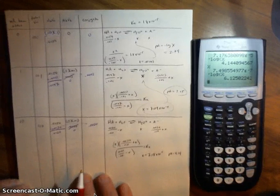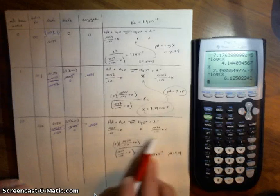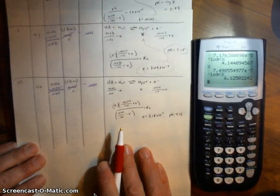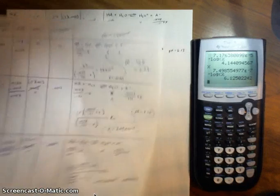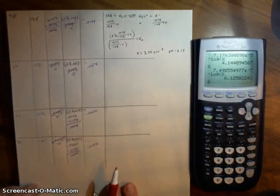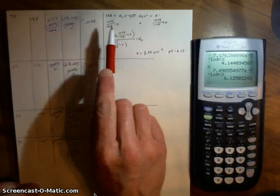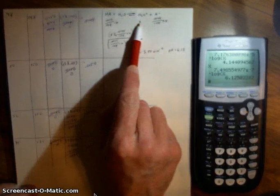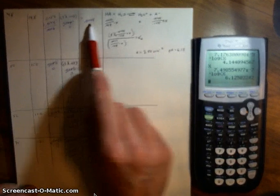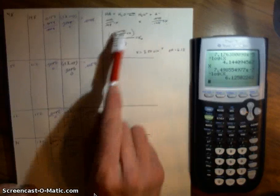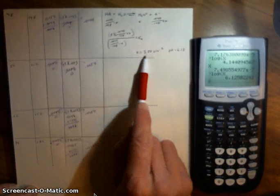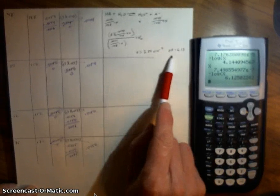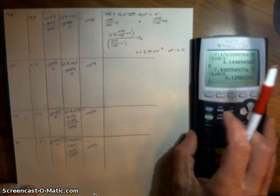Continuing with the strong-weak titration, I've written out the work that was done for 10 milliliters so you can check your own work. I also did the work for 48 milliliters. We figured out moles of acid over total volume minus x, and moles of conjugate base over total volume plus x, set it up as the equilibrium, solved for x — the concentration of hydronium — took the negative log, and it becomes 6.13.